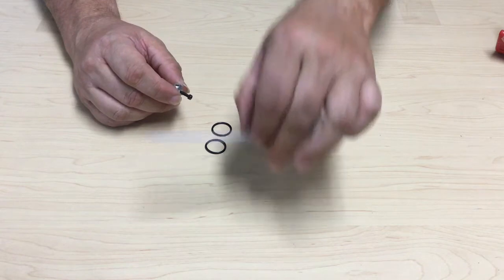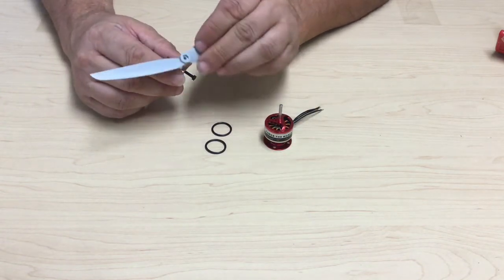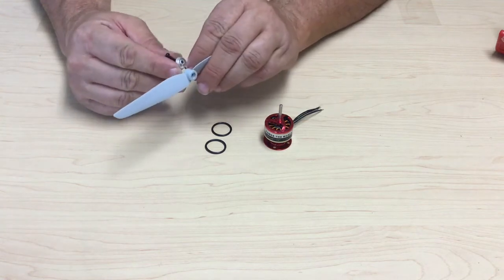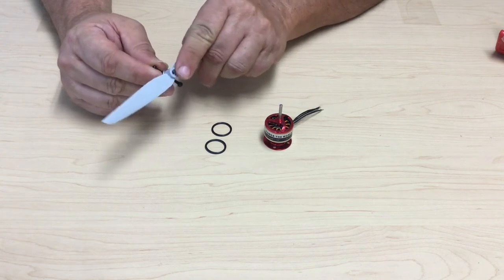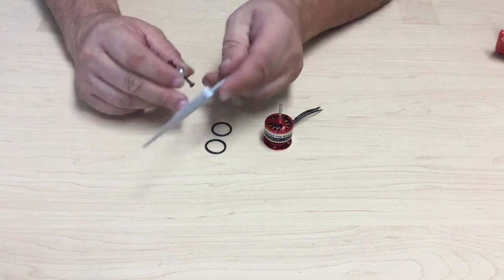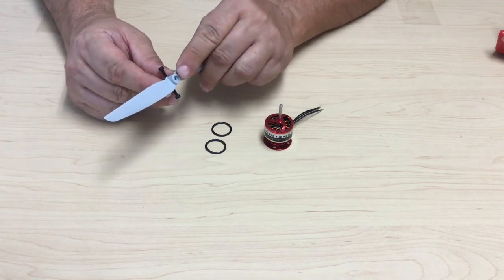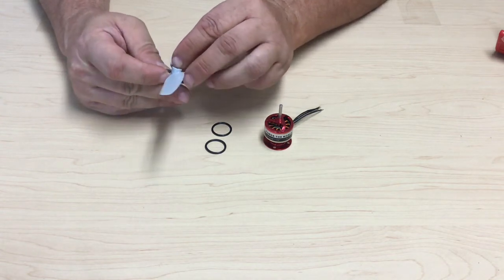When you put your prop on the prop saver, you want it to sit firmly. You don't want it to slide from side to side. If we try to put it on this side, it will not fit. So we're going to put it on the other side, the narrower side. Put the prop on the prop saver with the back of the prop against the prop saver.